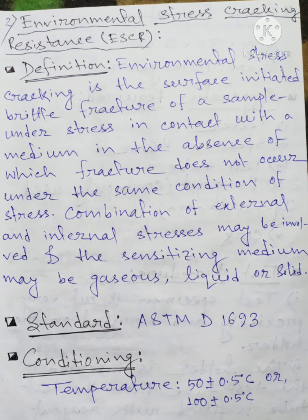Environmental stress cracking resistance involves reagents and their reactivities with a plastic sample. The standard used is ASTM D1693 — ASTM stands for the American Society for Testing and Materials. The conditioning temperature is 50 ± 0.5°C or 100 ± 0.5°C.